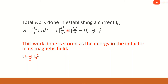Applying the limits, we get L times I₀ squared divided by 2, minus 0. That is equal to half L I₀ squared. This work done is stored as the energy in the inductor in its magnetic field.